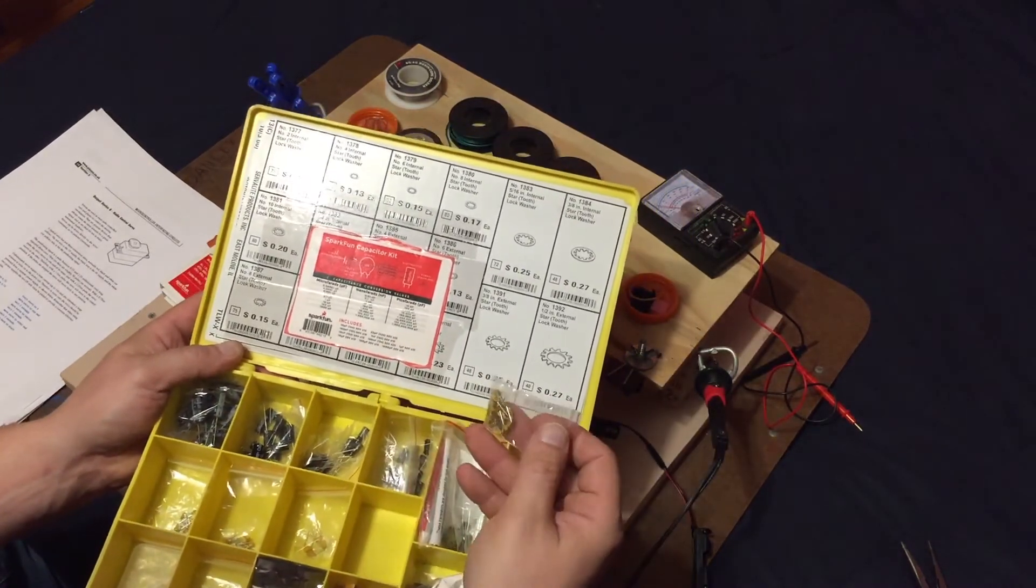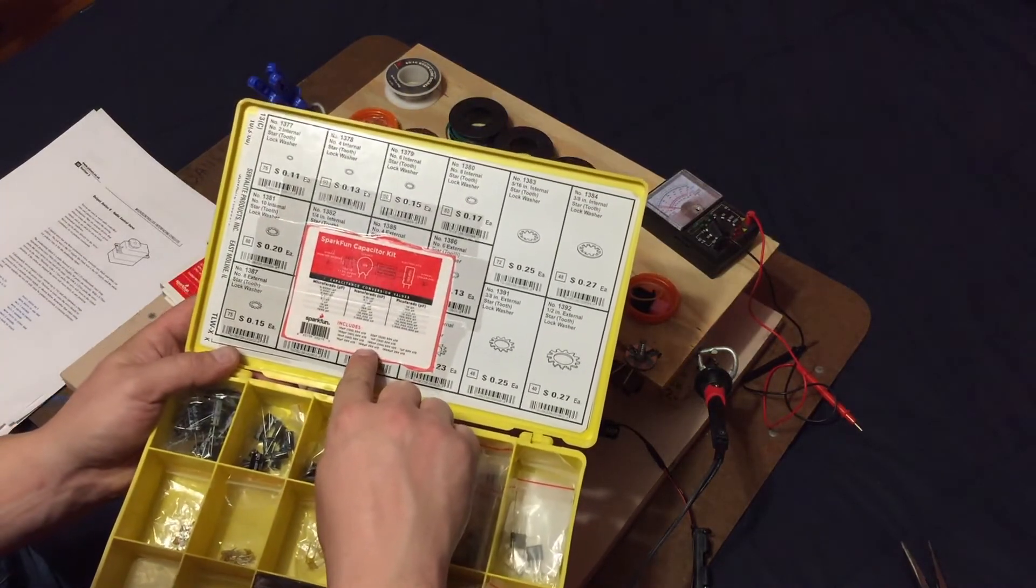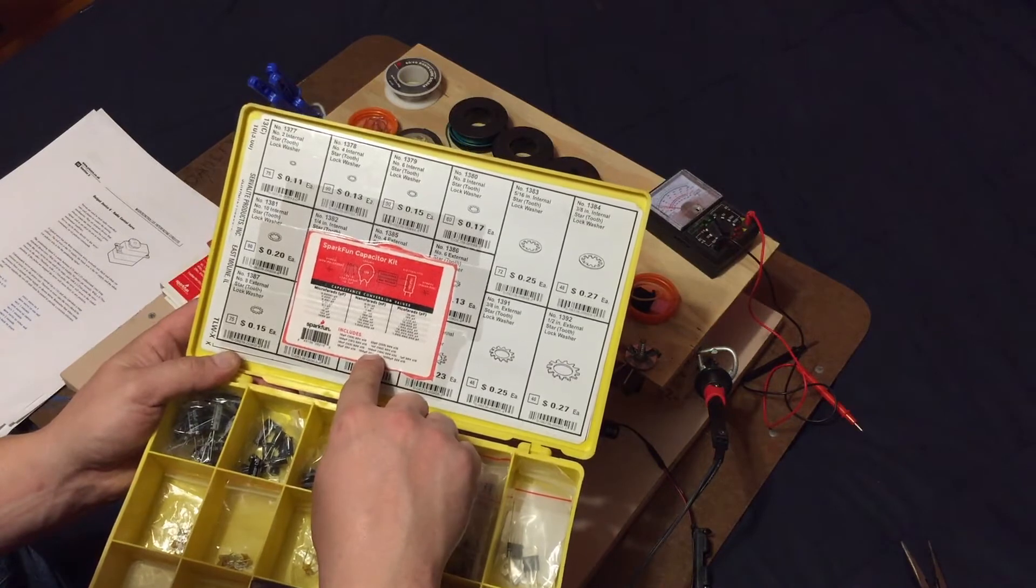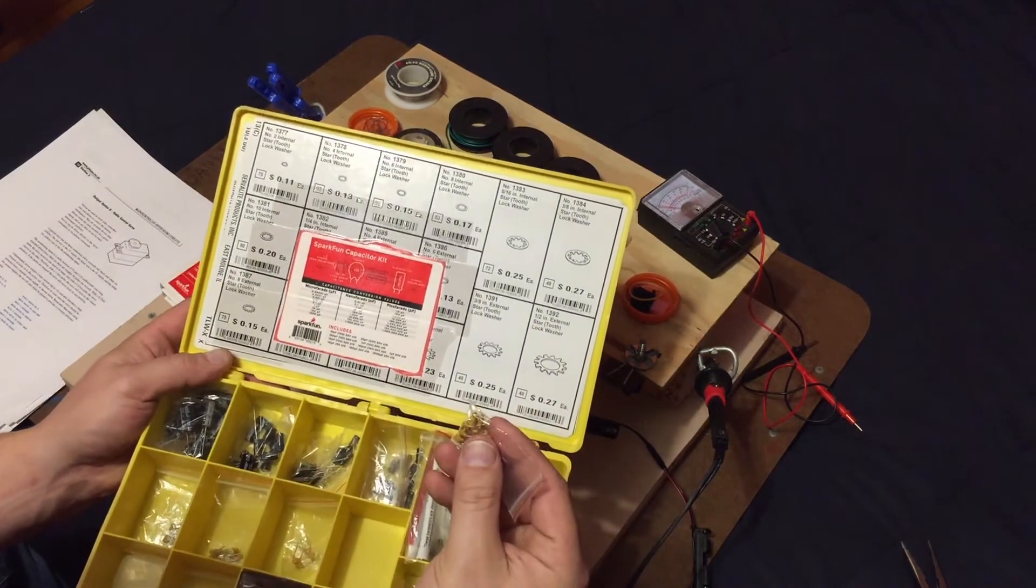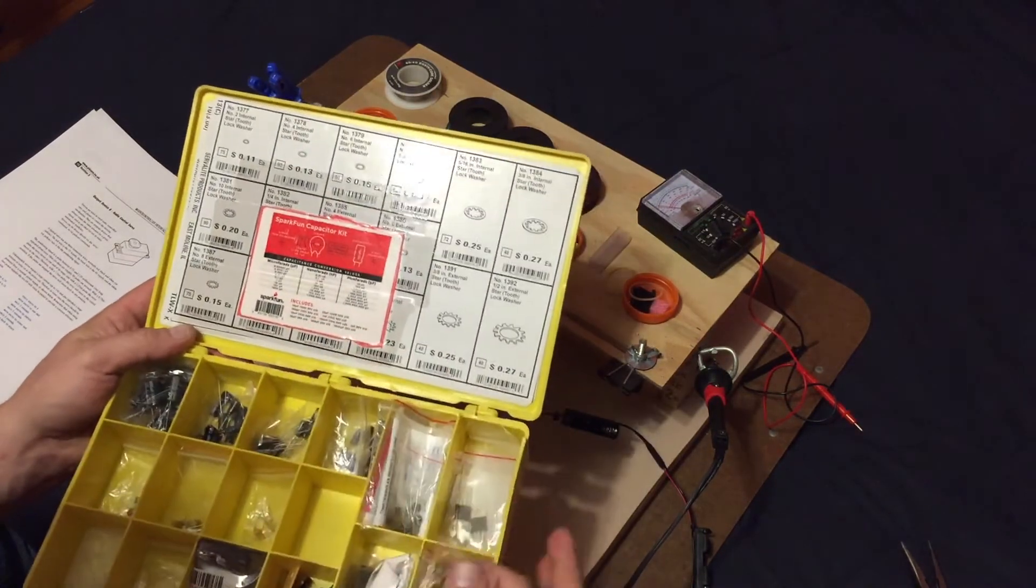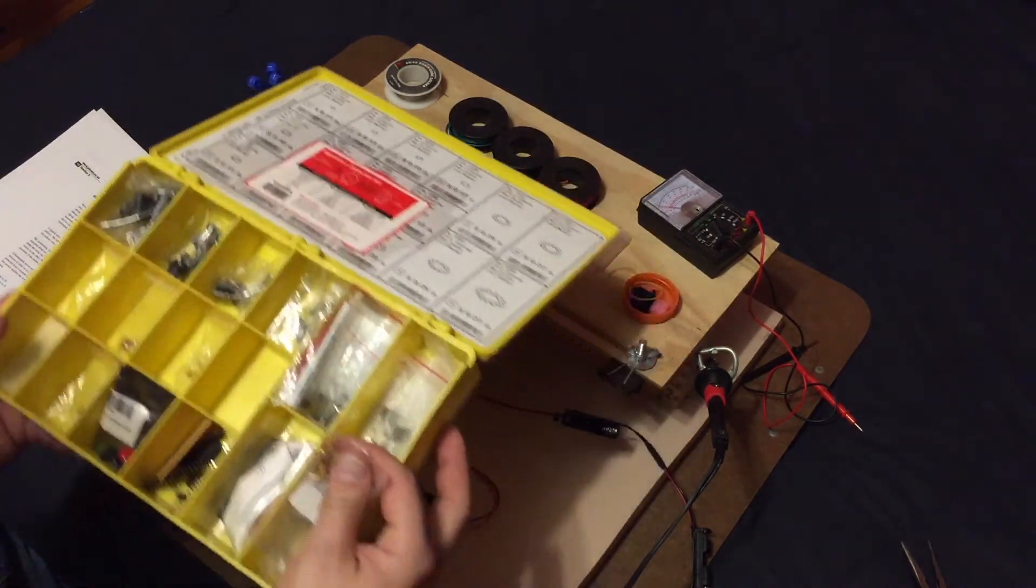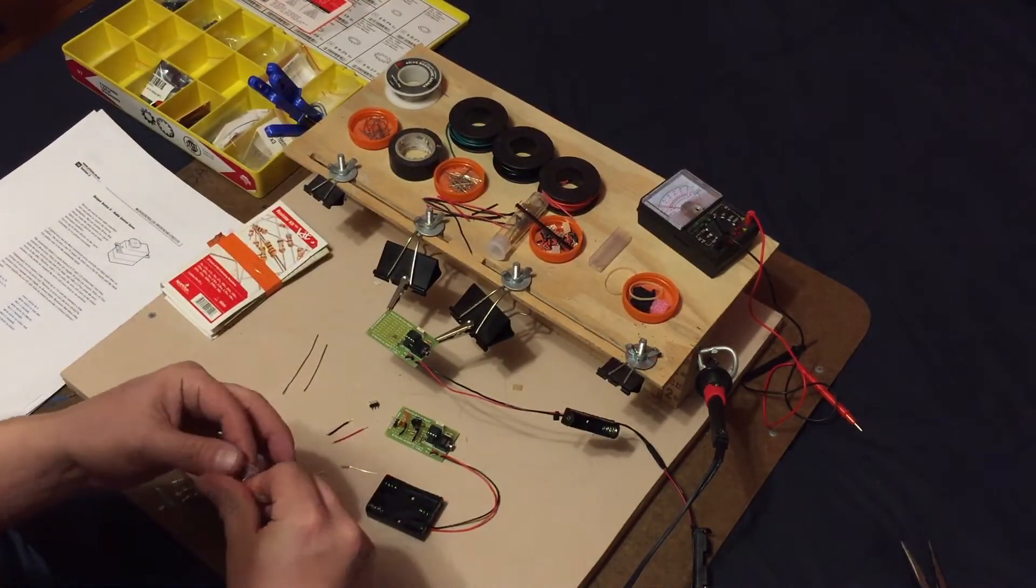But what we're going to use is these are labeled 104s, which are our 100 nanofarad capacitors. This is what we're going to use here. So we're just going by this chart and by the PDF. So we just need one of these.